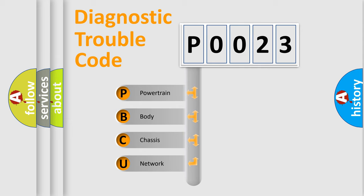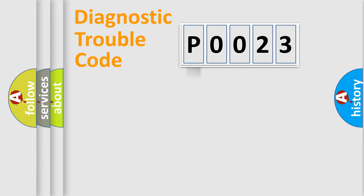We divide the electric system of automobile into four basic units: Powertrain, Body, Chassis, and Network.